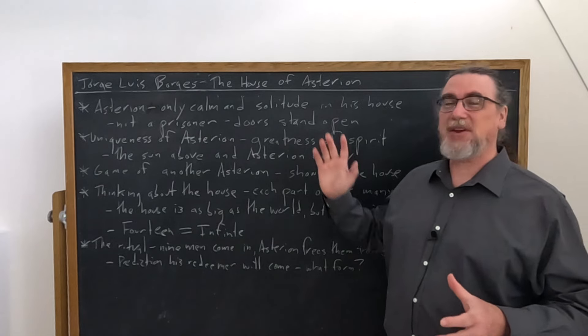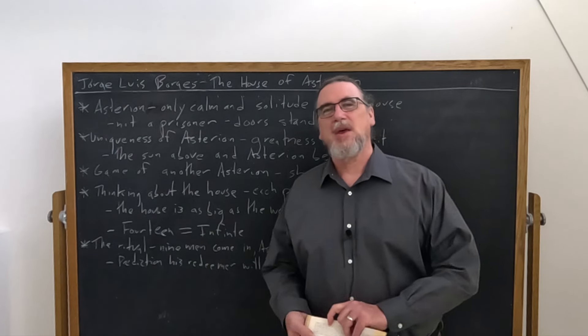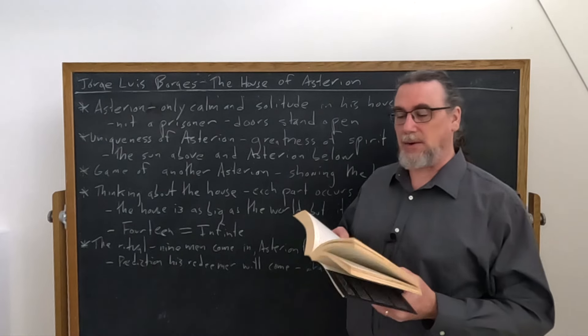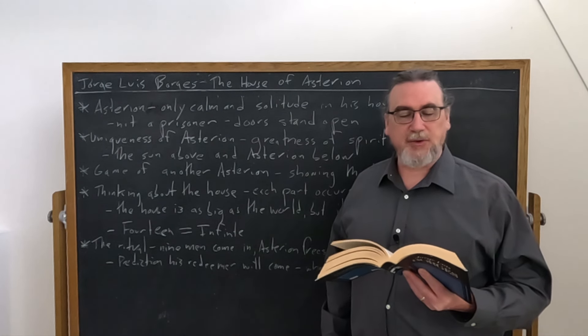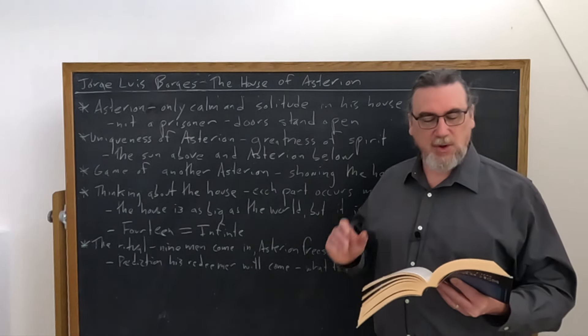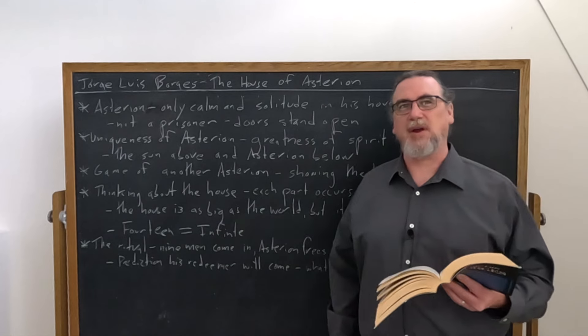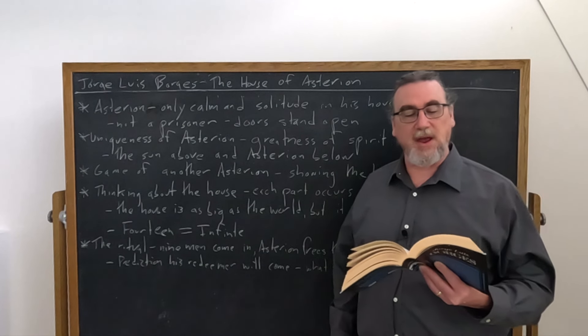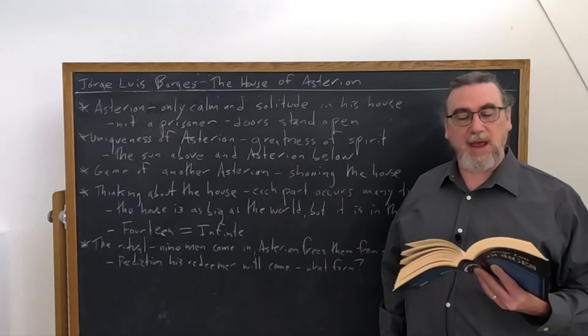Now going on, Asterion is going to tell us two things about his house which is the title of the story. Anybody can come in and he can go out. He says I never leave my house but it's true that its doors whose number is infinite stand open night and day to men and also to animals. Anybody who wishes to enter may do so.